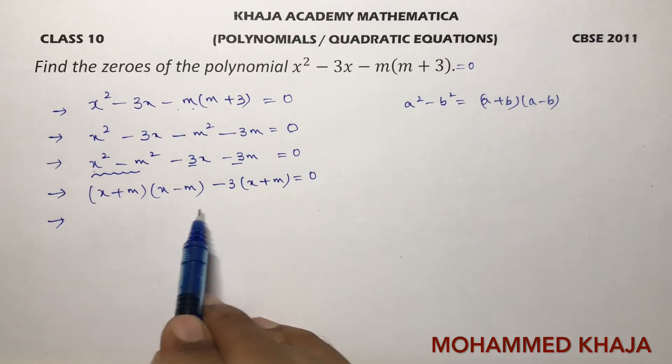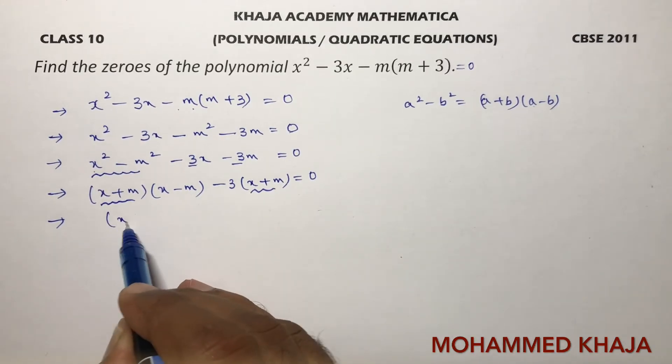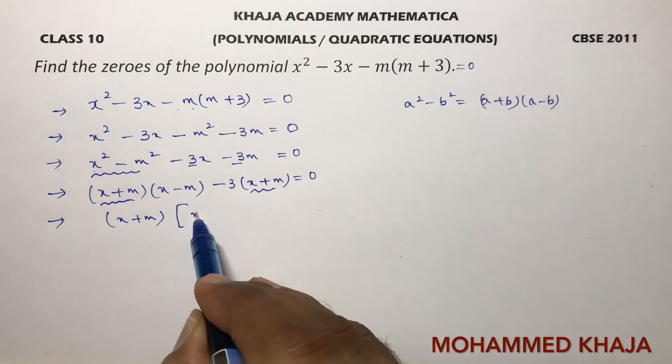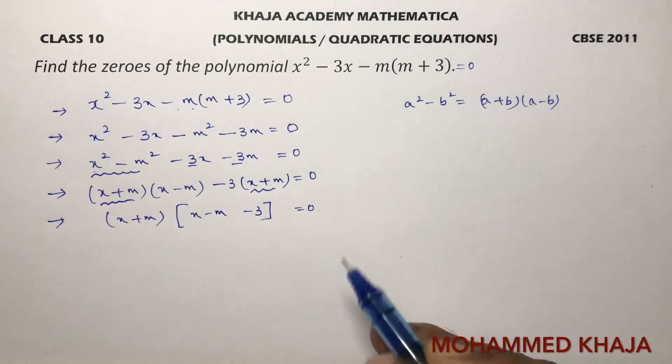Now, in these two terms, again I can take (x + m) common. So (x + m) into, I am left with (x - m - 3) = 0.